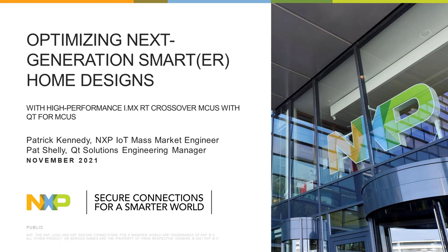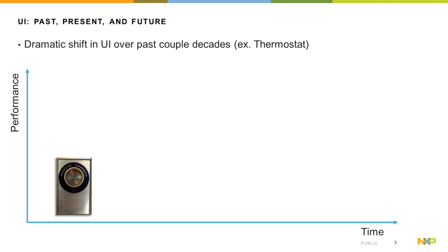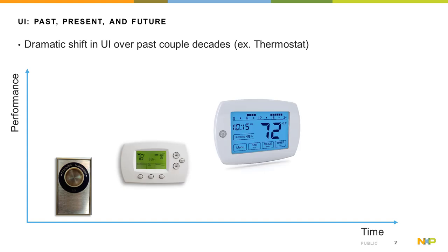Before getting started you might be wondering what exactly do we mean by optimization, what do we mean by next generation, and why do we need optimization in the smart home? To illustrate why optimization is important in the context of developing smart home products, we look at a very simple use case: thermostats. When I was growing up my thermostat looked something like this, consisting of a couple of dials and switches, and yet over time functionality for these thermostats has risen rapidly.